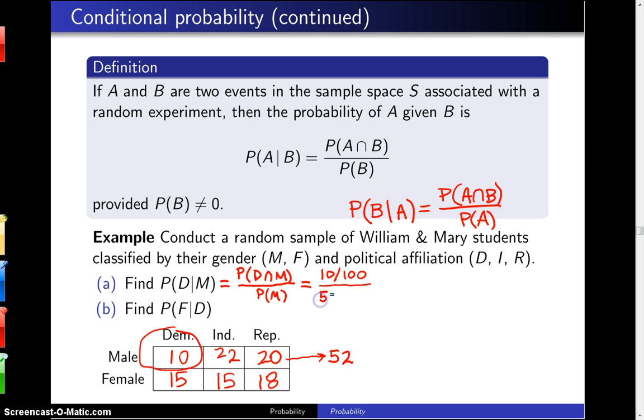So this is 52 over 100 and that turns out to be 10 divided by 52. Cut both of those in half, you get 5/26 as the probability.